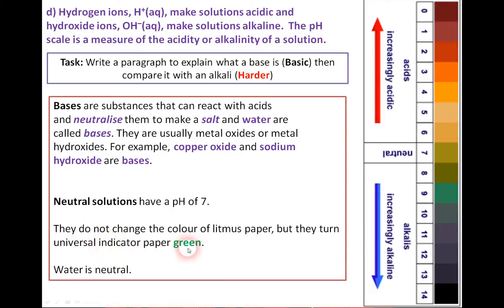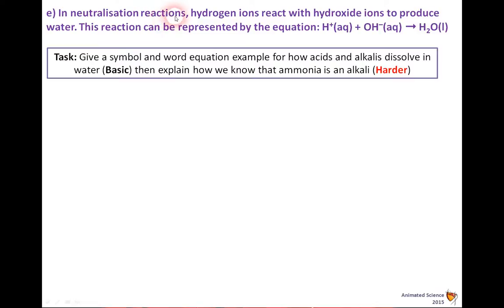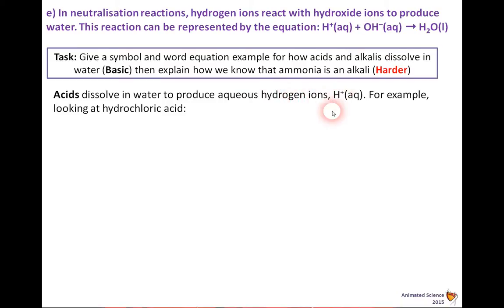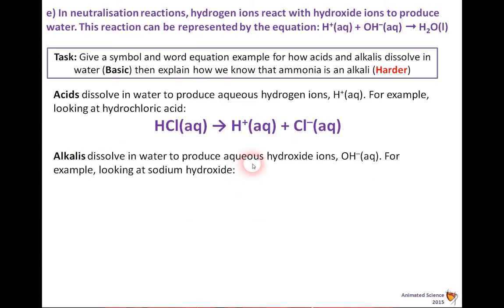Bases are substances that can react with acids and neutralise them to make a salt and water. They are usually metal oxides or metal hydroxides — for example, copper oxide and sodium hydroxide are both bases. Neutral solutions have a pH of 7, do not change litmus paper colour, but turn universal indicator paper green. Distilled water is neutral. Now in a neutralisation reaction, hydrogen ions react with hydroxide ions to produce water. Acids dissolve in water to produce H⁺ ions — for example, HCl(aq) → H⁺ + Cl⁻.